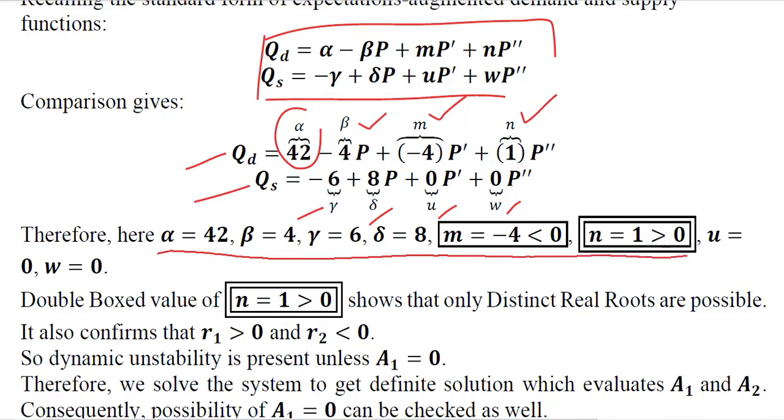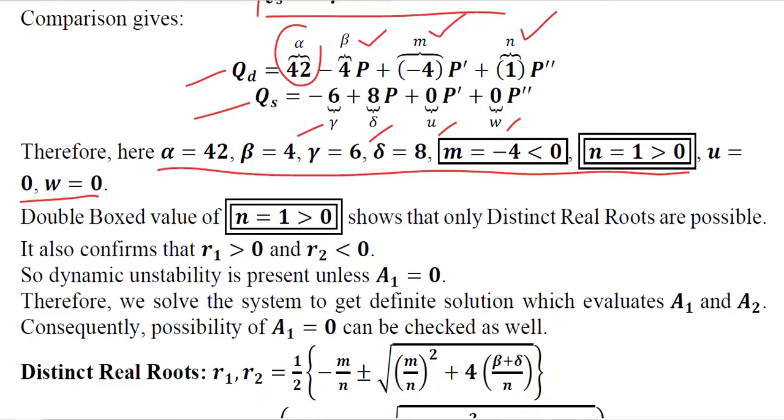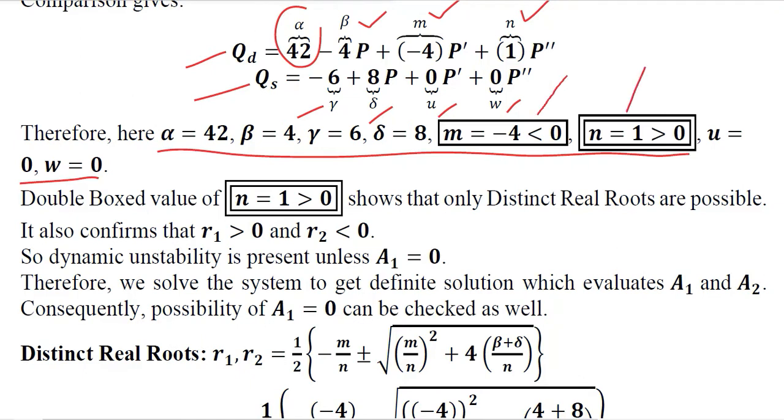Gamma, delta, U and W are also found. So we have listed the values by their comparison. Here our focus is on the value of N and M because we know that these are crucial in determining the nature of roots as well as the dynamic stability of the time path.